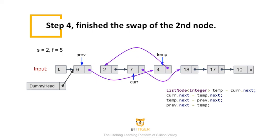Now the cur node is node 7. We need to move the next node 18 to the head of the sublist. After the swap, now the sublist looks like this: 18, 4, 2, and 7. At this time, since the cur pointer has already moved to the end of the sublist, we have successfully reversed the list.